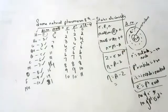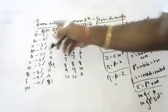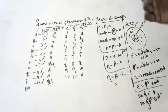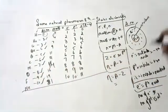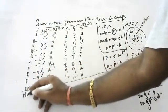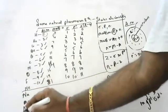So to summarize: neutron number equals mass number minus atomic number. Atomic number is directly the number of electrons or protons. Now let's look at more elements — sodium, magnesium, aluminum. Sodium's atomic number is 11 and mass number is 20. Magnesium's atomic number is 12 and mass number is 24. Aluminum's atomic number is 13.